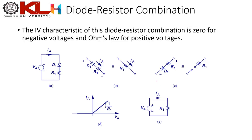Now let's look at diode-resistor combinations and their IV characteristics. With a voltage source V_A in series with diode D1 and resistor R1: when V_A is positive, the diode is forward biased, replaced by a short circuit, and current I_A = V_A / R1 flows.